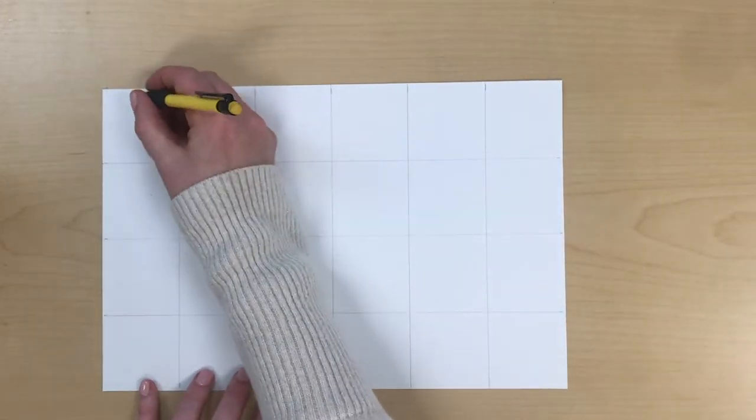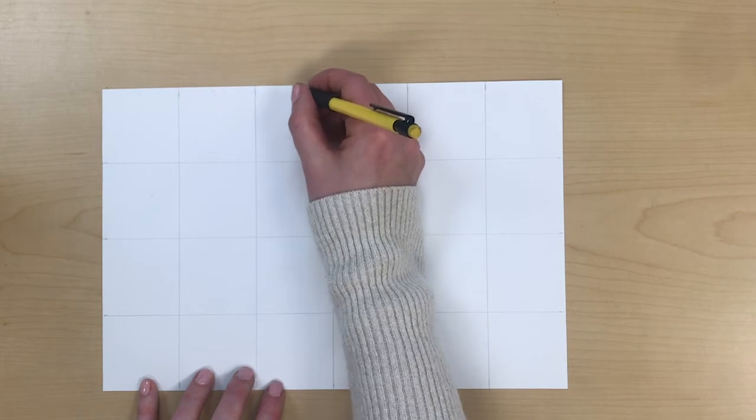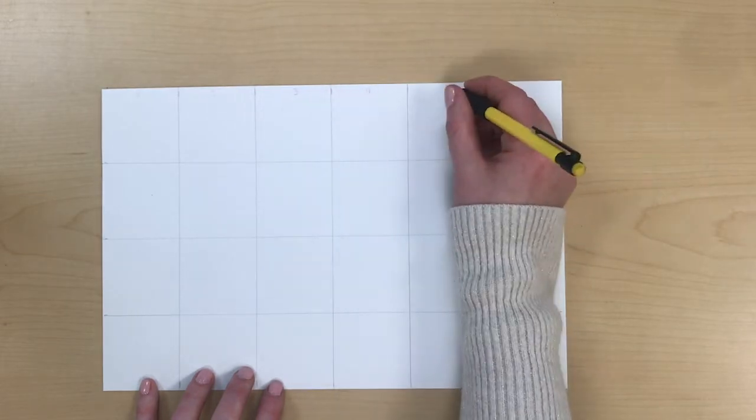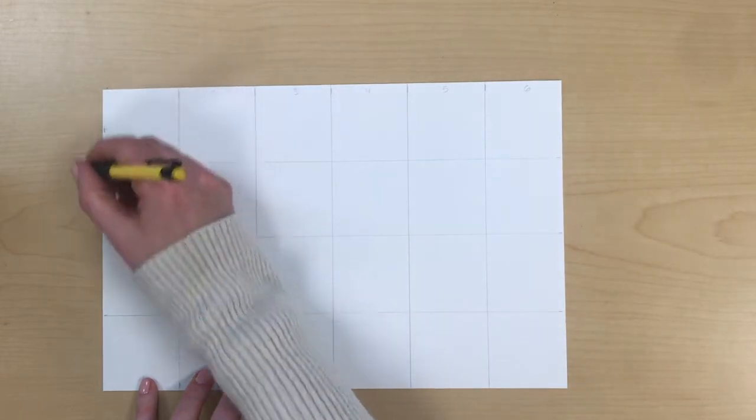I'm gonna number and letter. I should have the same numbers one through six and the same letters ABCD across the vertical axis.